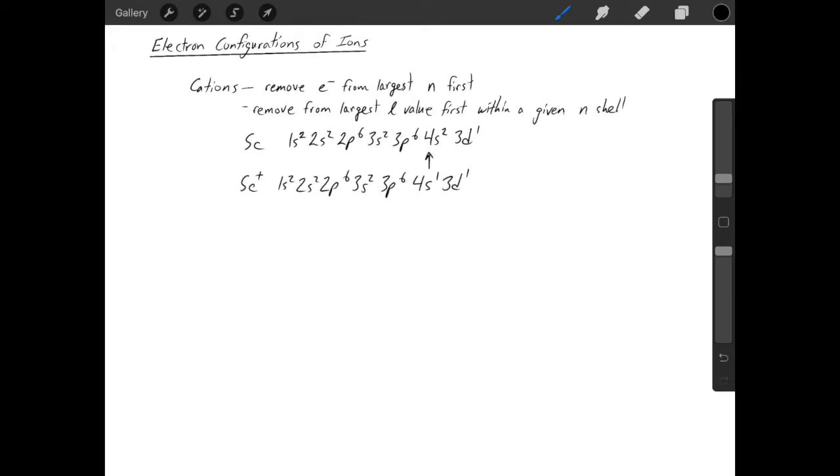Then, if you wanted to make a scandium 2-plus ion, you would have had to remove two electrons from scandium, or a single electron from scandium 1-plus. And again, the highest n-value is still 4, so you're going to take the electron from the n equals 4 shell. And now, for scandium 2-plus, the n equals 4 shell is entirely empty. And because it's empty, you just don't show it. You don't write a superscript of 0 or anything like that.